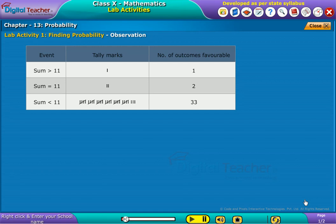From the table shown on screen, we observed that chances of occurring the sum of two dice with greater than 11 is one. Thus number of favorable outcomes in this case is one.